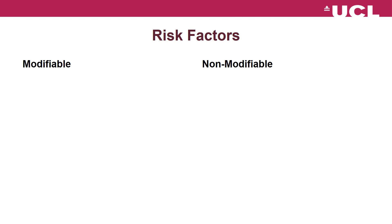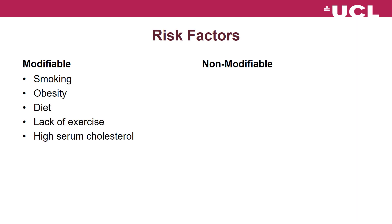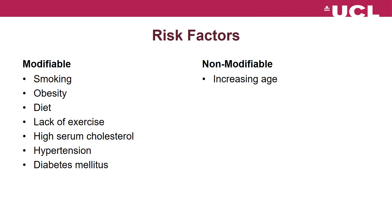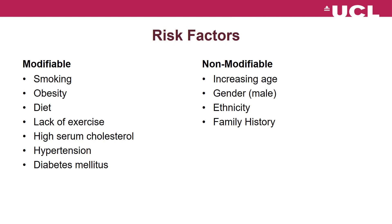Risk factors for ACS include modifiable factors such as smoking, obesity, poor diet, lack of exercise, high cholesterol, hypertension, and diabetes mellitus. Non-modifiable risk factors include increasing age, male sex, ethnicity, and family history. Mr. Majeed has several modifiable and non-modifiable risk factors.